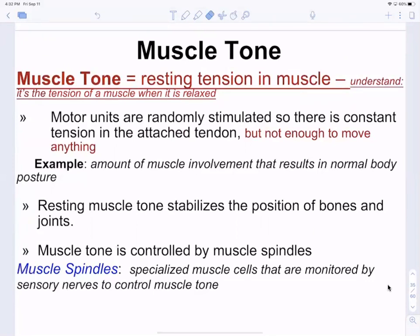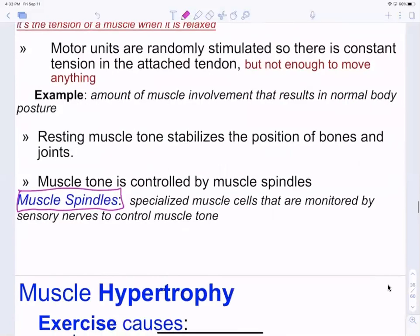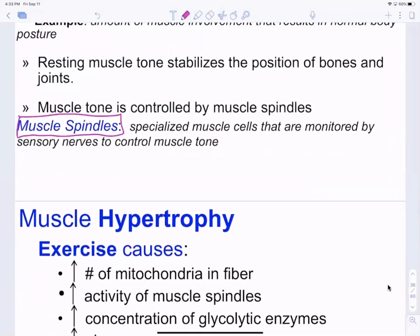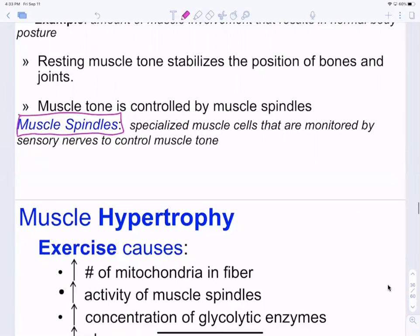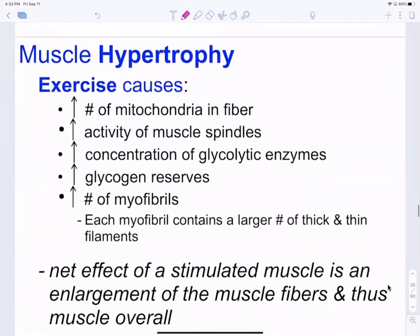Embedded in your muscles are receptors called muscle spindles. These monitor the overlap or stretch of the muscle fiber. If a muscle fiber gets longer or shorter, the muscle spindles signal the cerebellum and brain that muscle length is changing, and the brain corrects it. For example, if you start to fall asleep and your neck muscles lengthen, the muscle spindles react, alert your brain, and your neck snaps back up before you hit the desk.